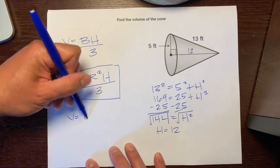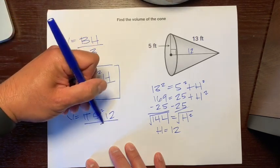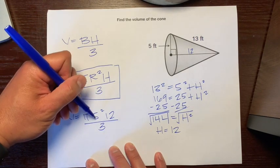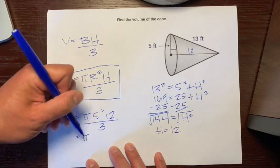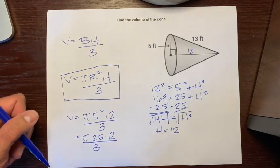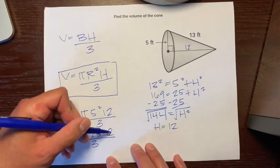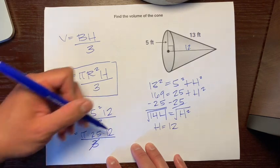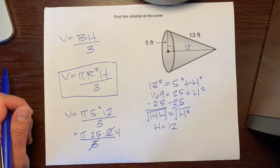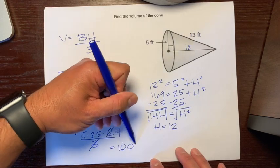So V equals pi. Radius is 5 squared times 12 over 3. And let's use order of operations. No parentheses, but we have an exponent. So 5 squared is 25 pi times 25 times 12 over 3. And we can multiply or make some numbers smaller. I like making numbers smaller. So this 3 goes into this 12 four times. So 3's cancel out. This 12 is turning to 4.